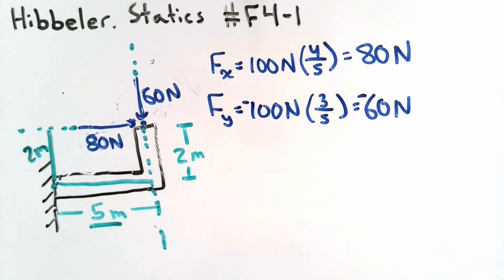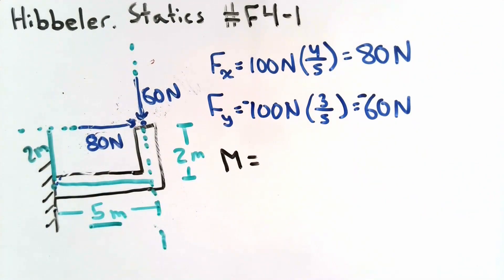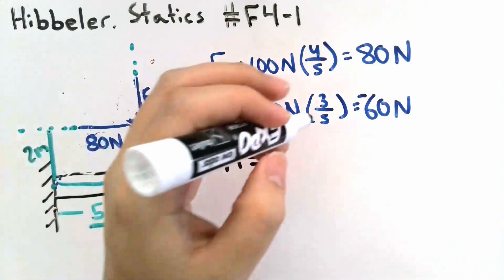Now we can use this information to calculate the moment about the point. The moment about my point will be equal to the sum of the individual moments that the two forces cause about that point. We have an 80 N force acting at a distance of 2 meters from my point.